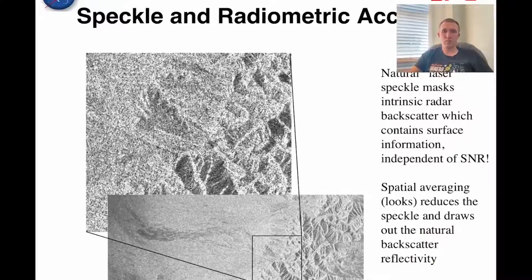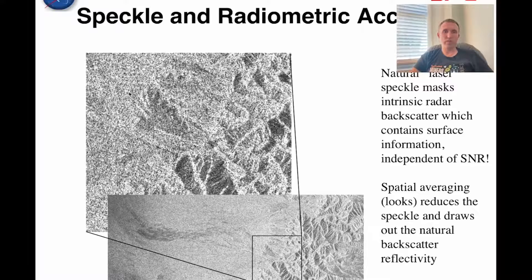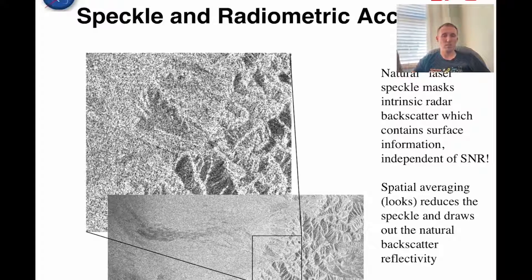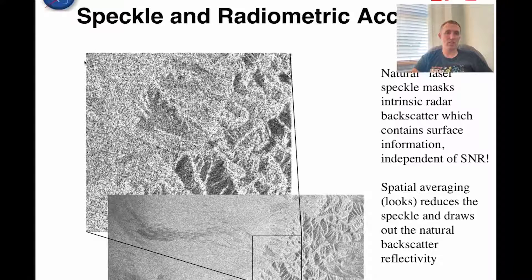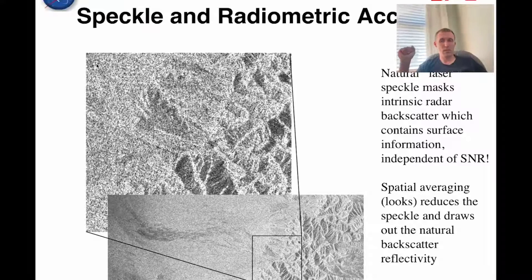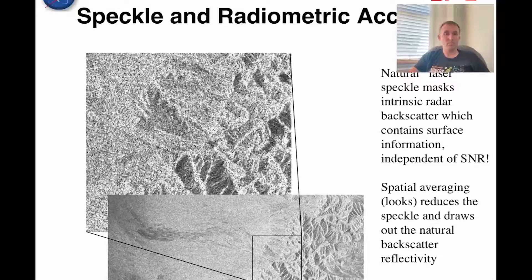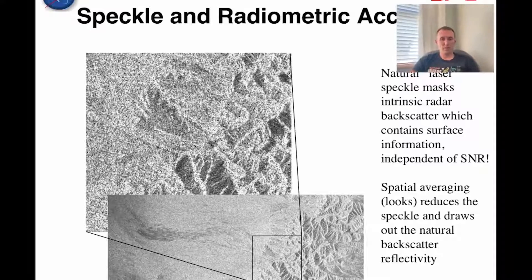Here is an illustration of speckle. You can see how on this surface you have light and dark alternating colors. This backscatter contains surface information independent of signal-to-noise ratio. Spatial averaging reduces the speckle and brings out the natural backscatter reflectivity. By averaging a group of pixels, you get the average backscatter of that area, which is oftentimes what we want to see — the smoothed-out backscatter. In some cases you really want to see the high-resolution signal, but in many cases you are better off with averaging.